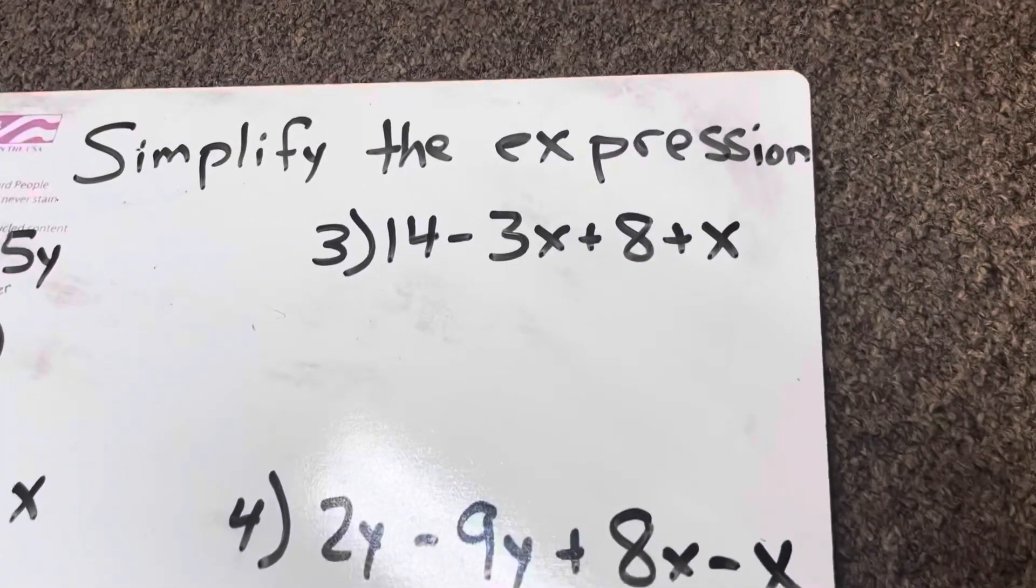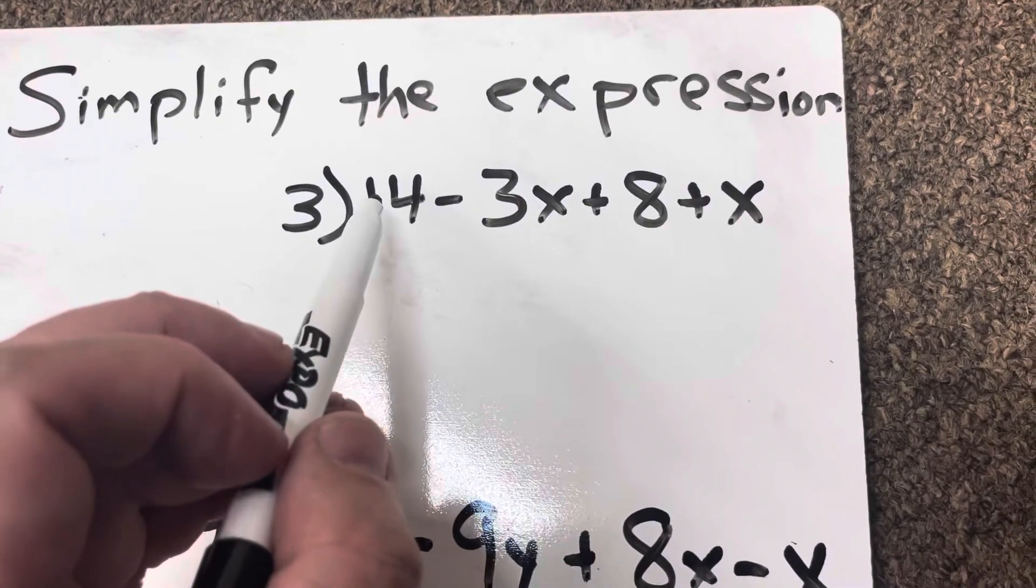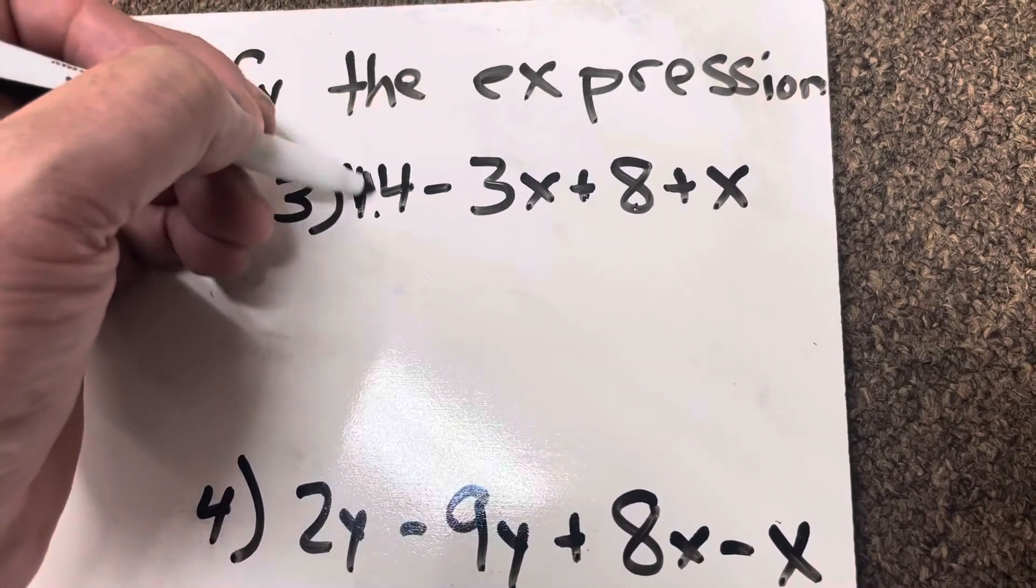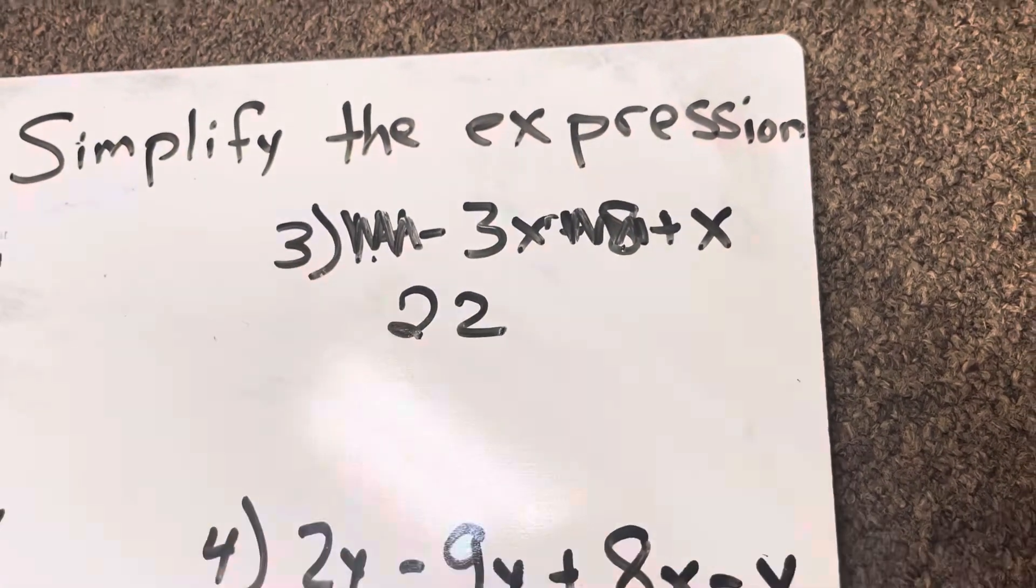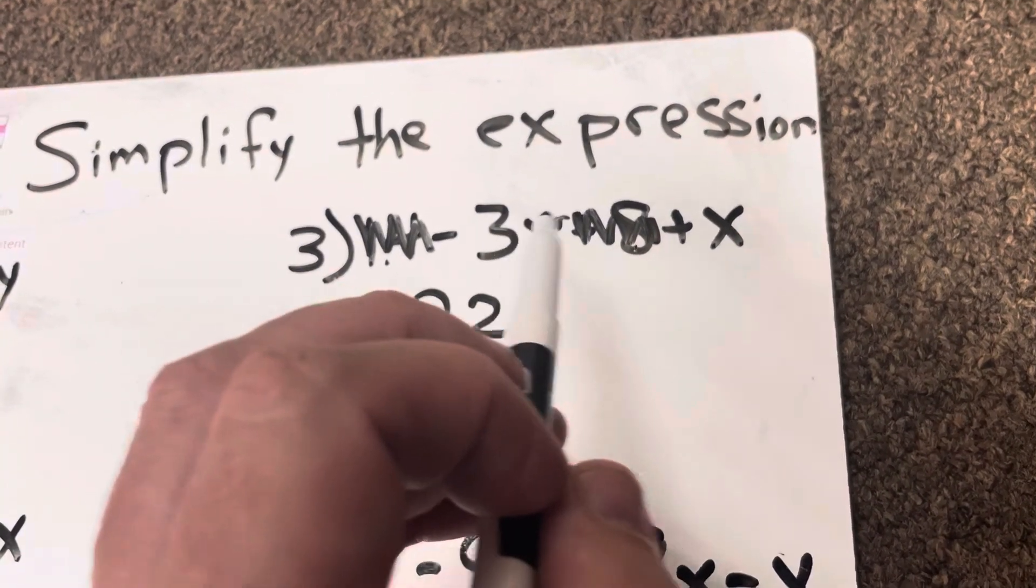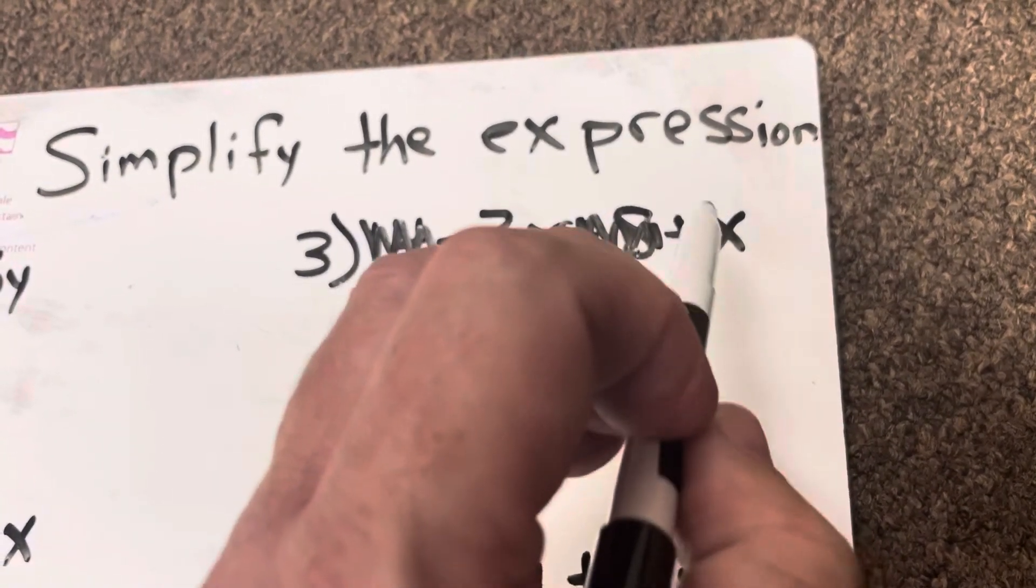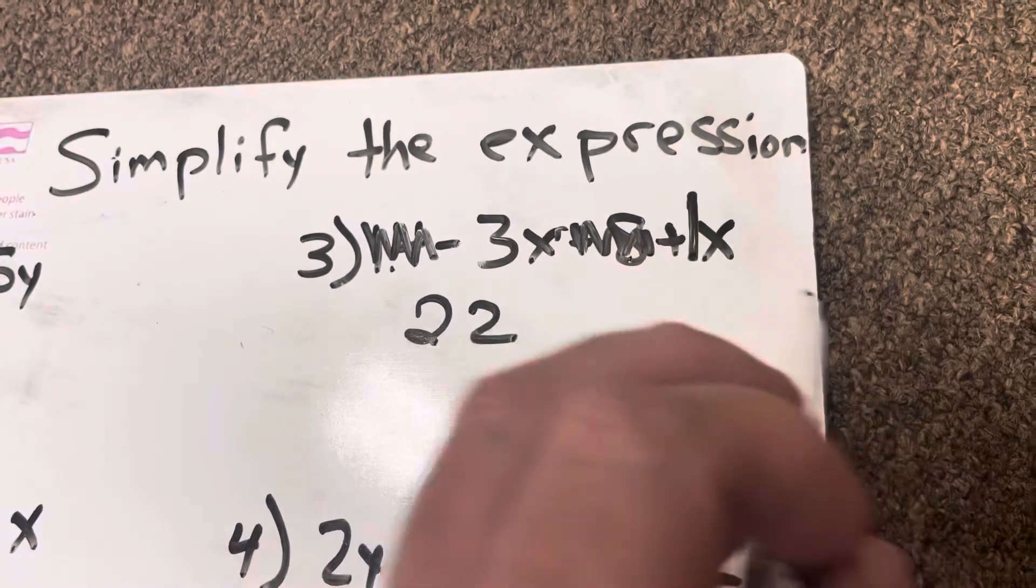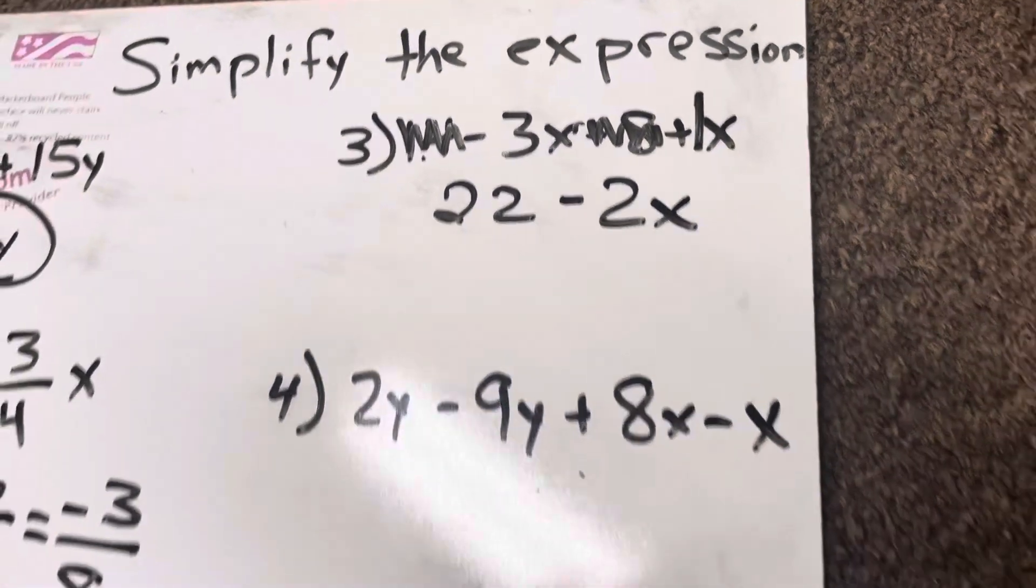Now, when I go to this one, 14 minus 3x plus 8 plus x. First let's deal with 14 plus 8. Combining the like terms. 14 plus 8 is 22. But then I have a negative 3x. Negative 3x plus x. So it's like negative 3 plus 1. Because remember when there's no variable in front of the x, that's a 1. We envision a 1 there. Negative 3 plus 1 is a negative 2. So this would be 22 minus 2x.